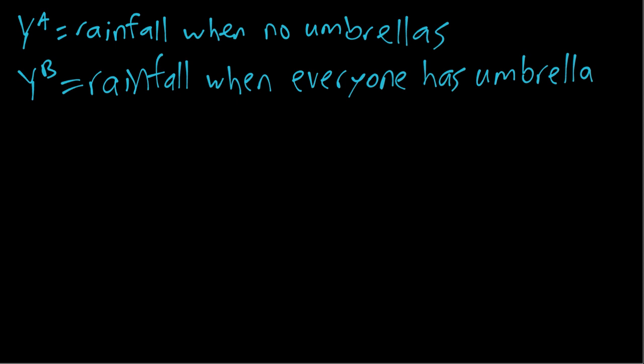If we just think about this statistically, if nobody is carrying an umbrella, it's probably either not raining at all or raining very little. So we would imagine our Y^A, if we think about the mean for example, the mean is probably close to if not equal to zero.